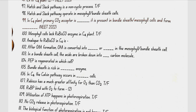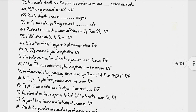RUBISCO does not have a greater affinity for O2 than CO2 — that is false. RuBP binds with O2 to form phosphoglycerate and phosphoglycolate. Utilization of ATP happens in photorespiration. CO2 is released in photorespiration — it is false to say no CO2 is released. The biological function of photorespiration is not known. At low CO2 concentration, photorespiration will increase. In the photorespiratory pathway, there is no synthesis of ATP or NADPH.